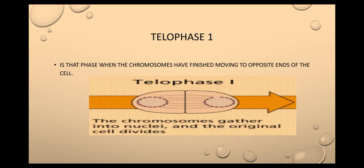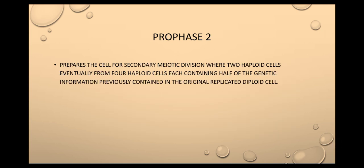The last phase of meiosis one is telophase one, when the chromosomes have finished moving to opposite ends of the cell. Next, prophase two prepares the cell for secondary meiotic division, where two haploid cells eventually form four haploid cells, each containing half of the genetic information previously contained in the original diploid cell.